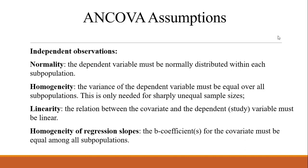The assumptions of ANCOVA include five points. The first three are the same as for ANOVA: the independence assumption, meaning observations must be independent with no autocorrelation; the normality assumption, meaning observations should follow a normal distribution; and the homogeneity assumption, meaning the groups being compared must have equal variances. The fourth assumption, specific to ANCOVA, is linearity — the relationship between the covariate and the dependent variable must be linear, not curvilinear or quadratic.